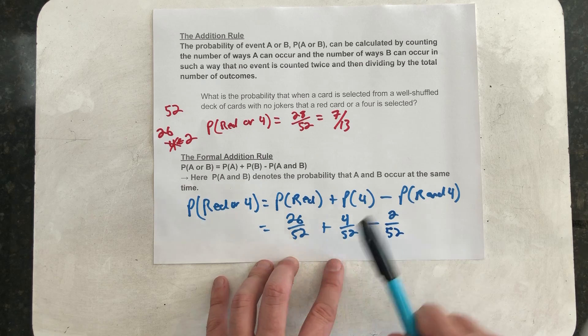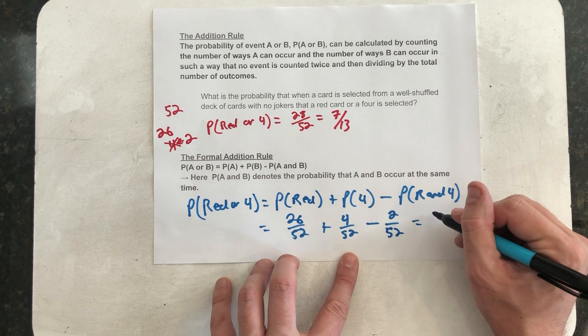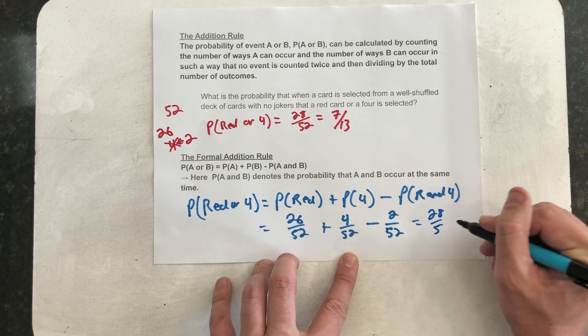Well, when we add those, we'll get 30 minus 2 is 28 out of 52. We get that same probability.